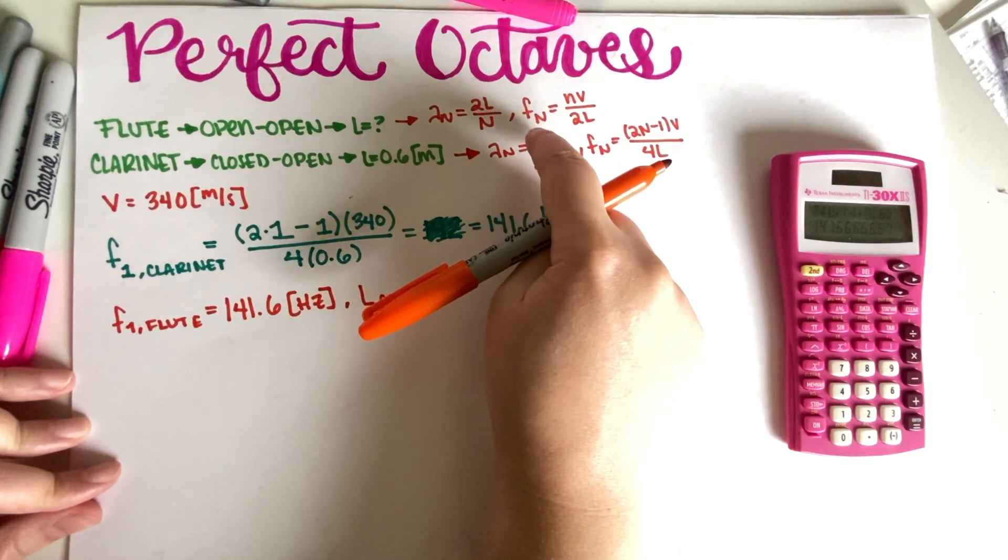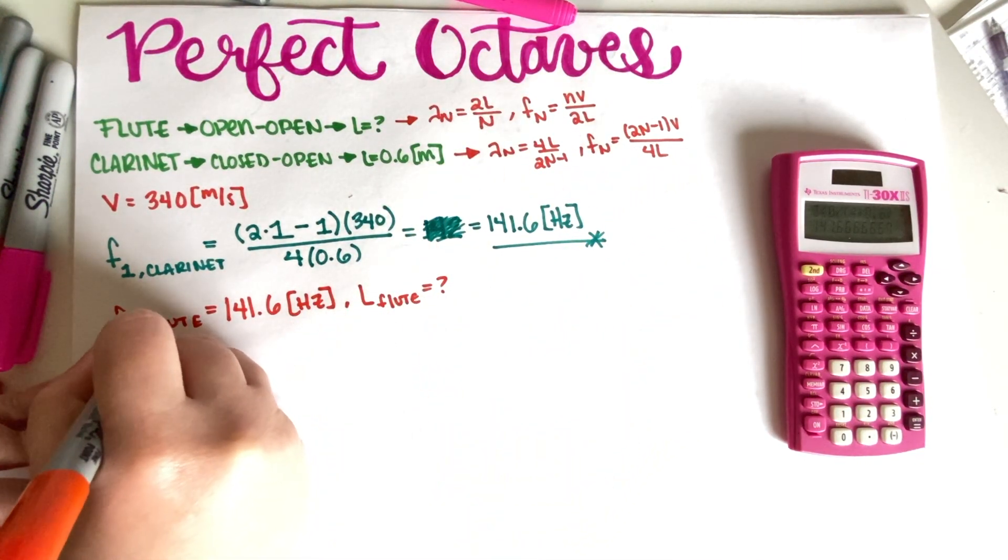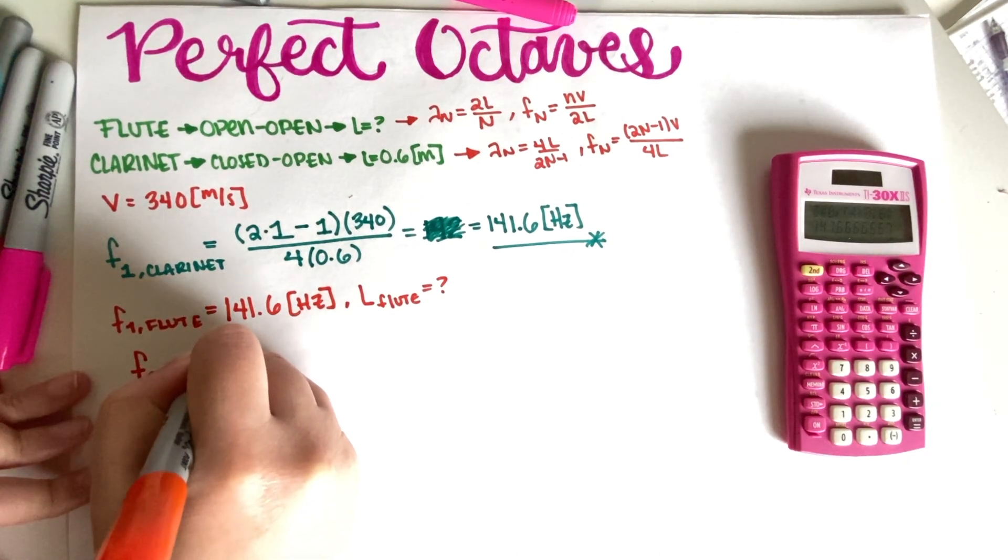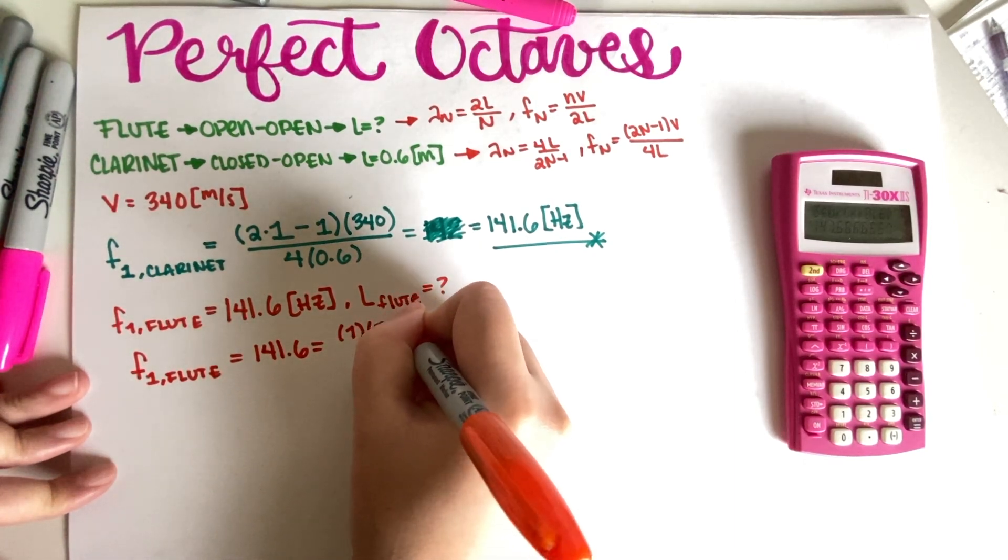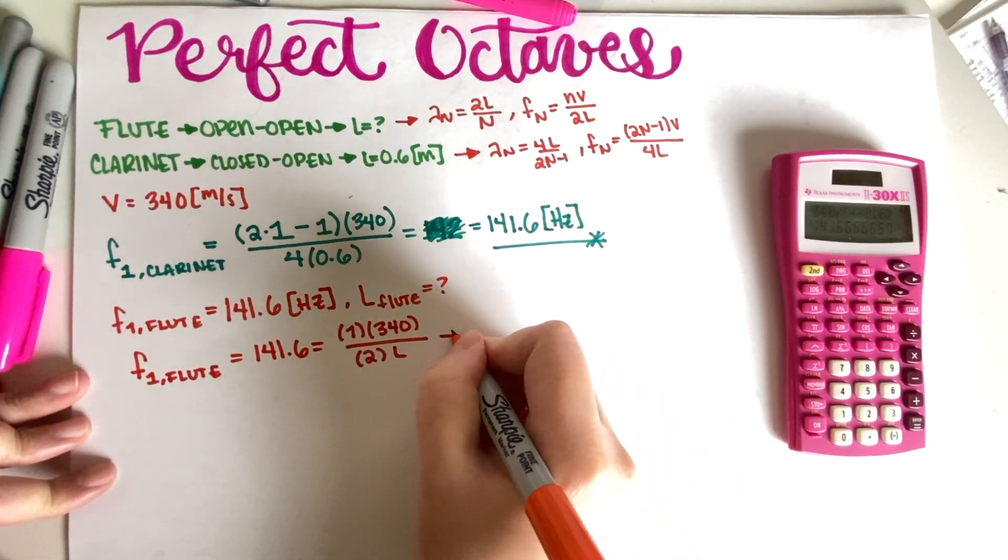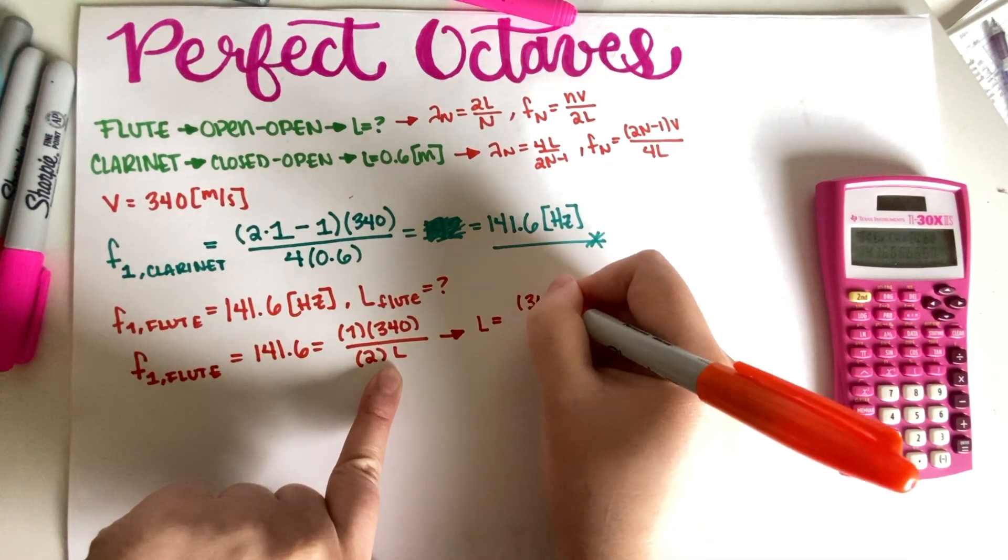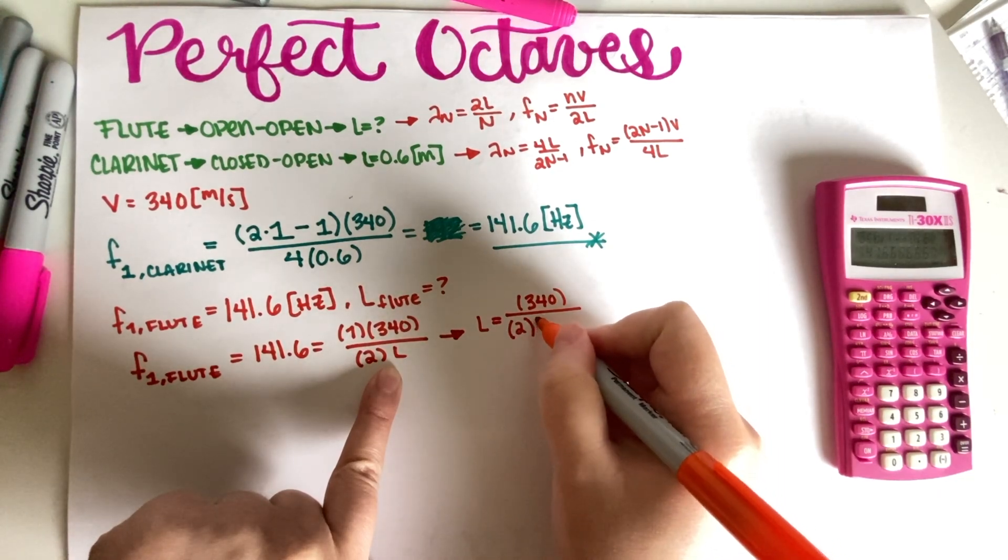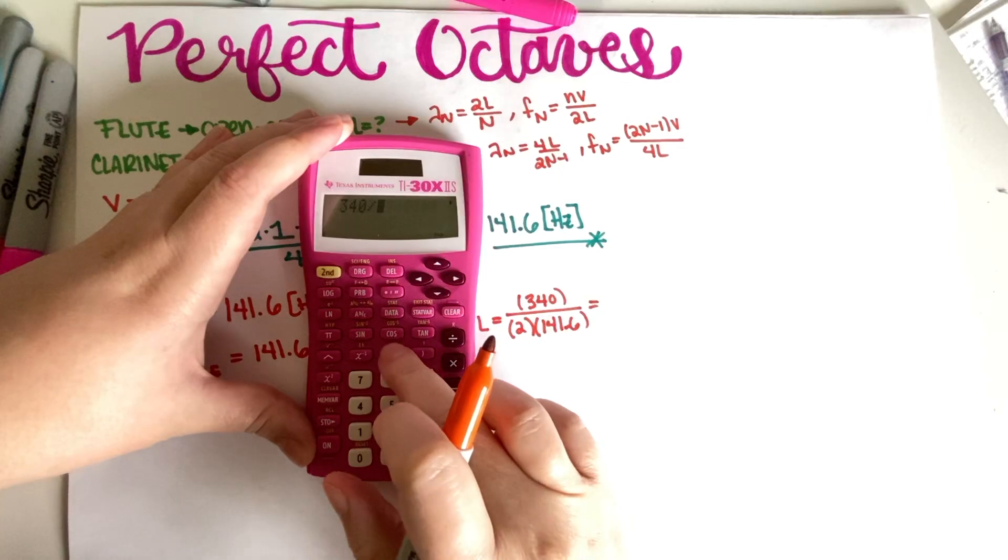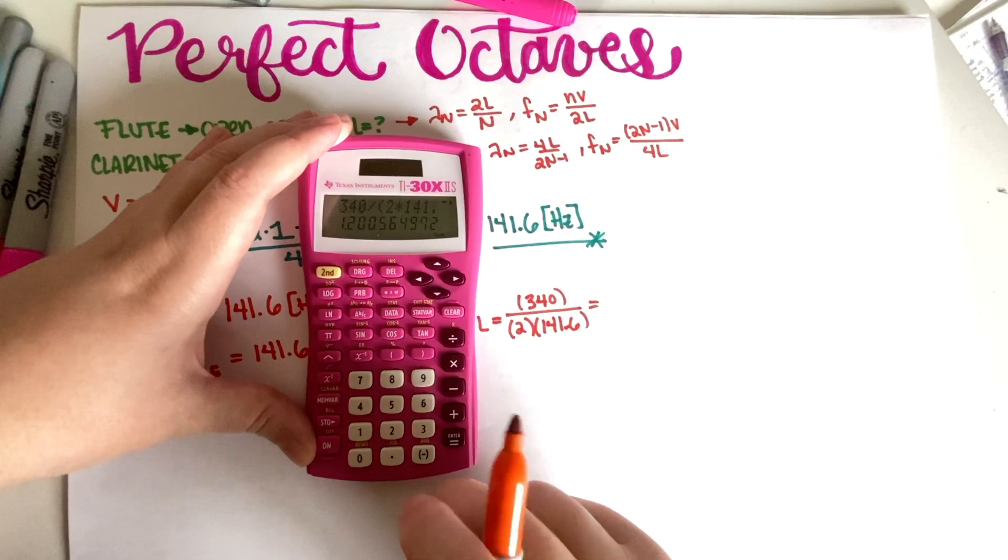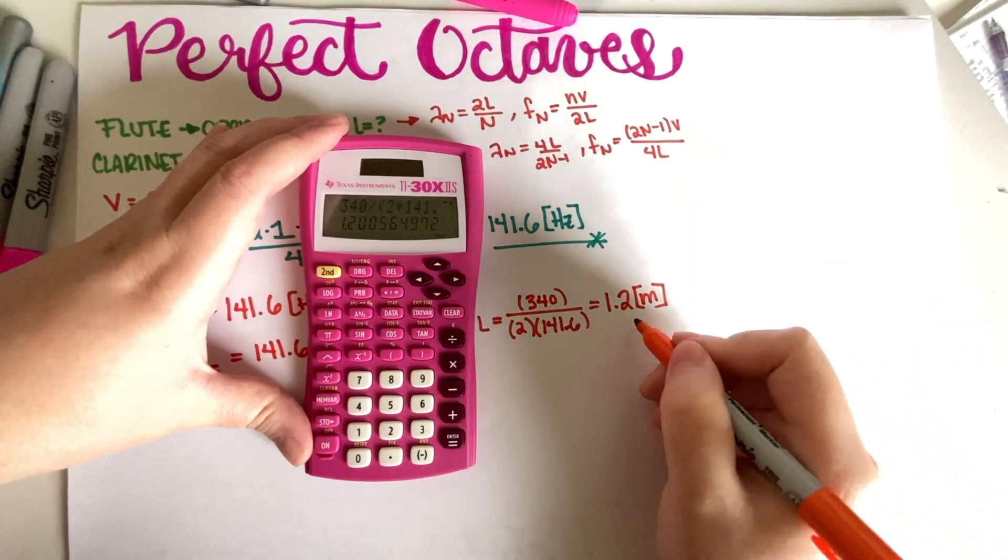Basically, we have to grab this number, but now flute is open-open, so we need to use—we need to find the new length. So we're gonna go ahead and use this equation over here which is appropriate for the flute. So let's just go ahead and copy that. But it is also equal to 1 times 340 divided by 2 times L. So if I go ahead and solve for L, then L is equal to 340—1 just goes away—divided by 2 times 141.6. So let's see, 340 divided by 2 times 141.6, that is equal to 1.2 meters, final answer for part B.